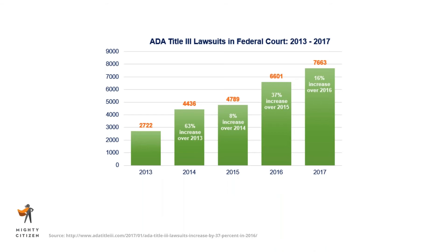I only expect this number to continue increasing as websites become more integral to our everyday lives. Huge names have been sued — including the NBA, NCAA, Toys R Us, Domino's Pizza, Reebok, Panera Bread, AMC Theaters, and Target. Target had to pay $6 million to settle a lawsuit filed by the National Federation of the Blind, plus $4 million to cover legal fees. You definitely don't want to ignore accessibility.